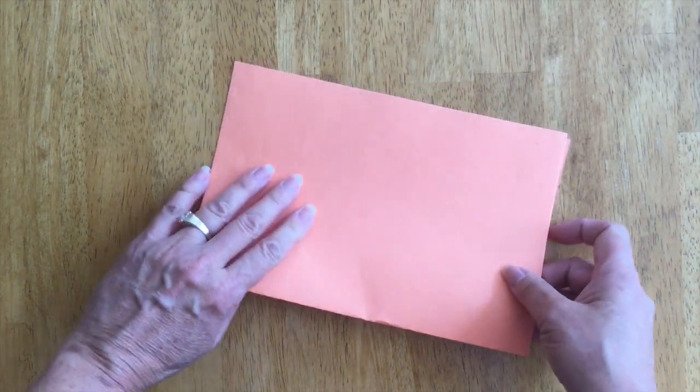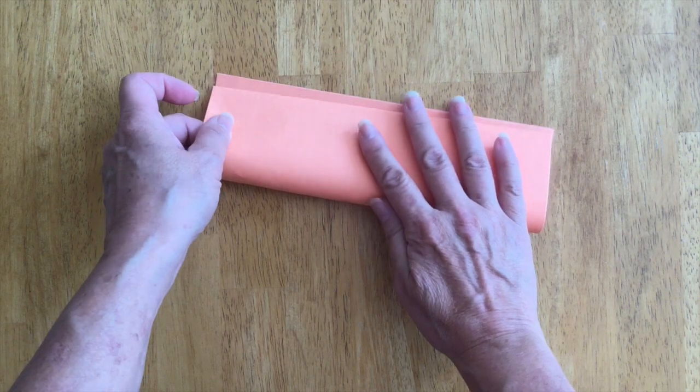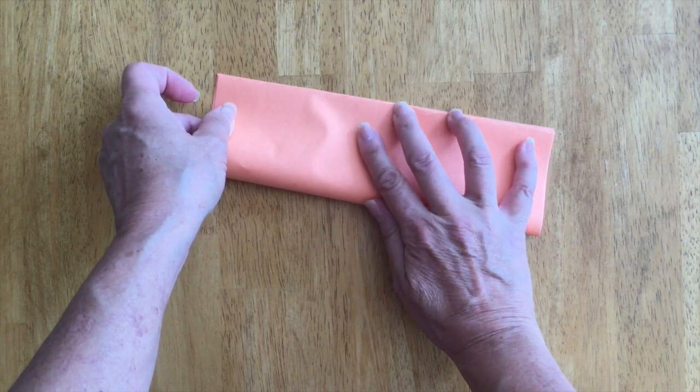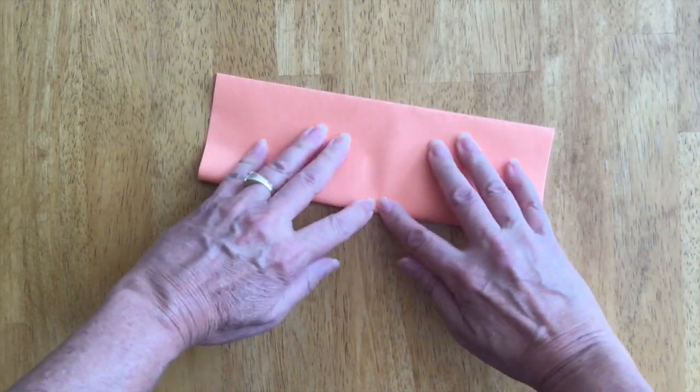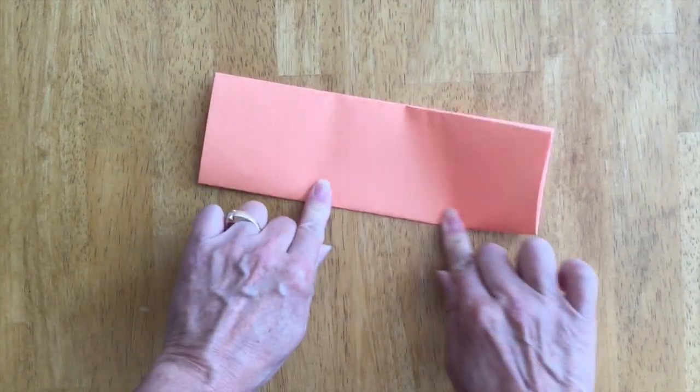Then you're going to fold it over one more time, corner to corner, matching up the edges and then flatten out the crease.